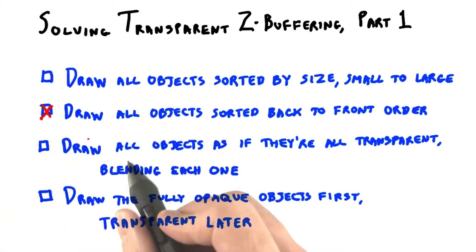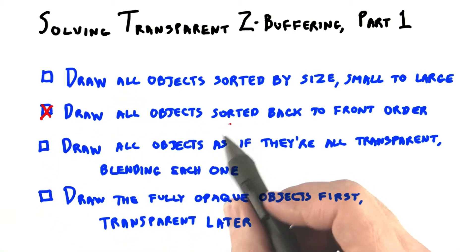The second answer works. The blue object is farther from the eye than the red one, so it'll be drawn first.